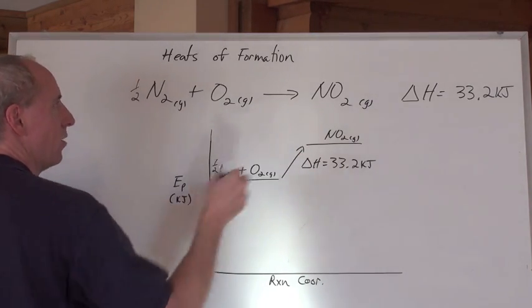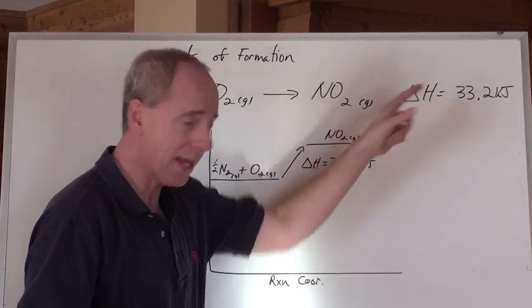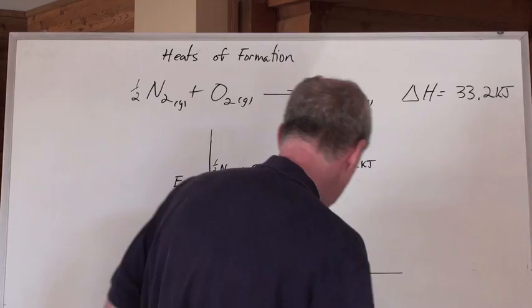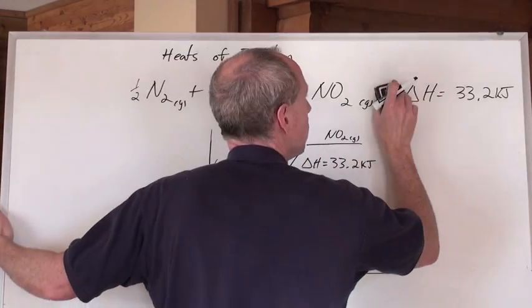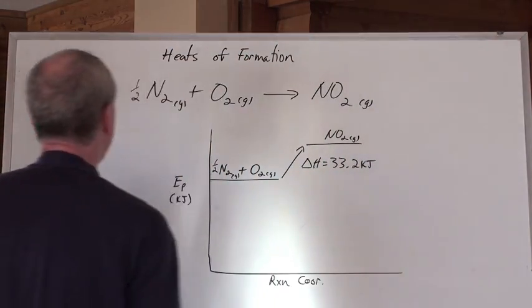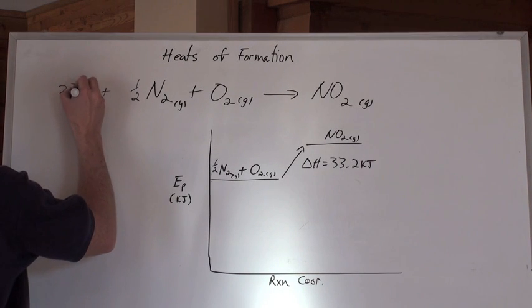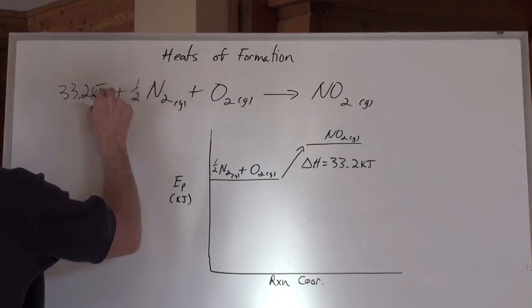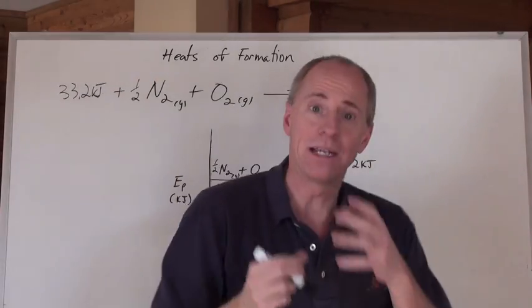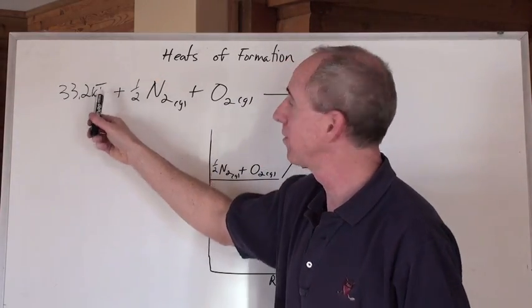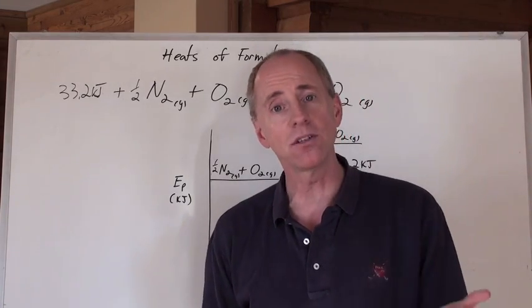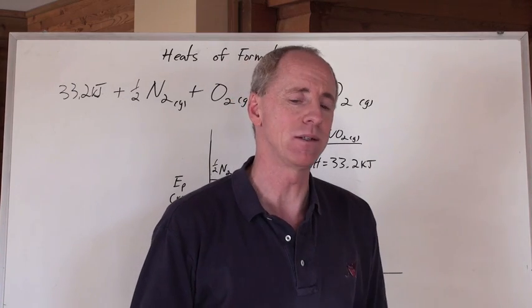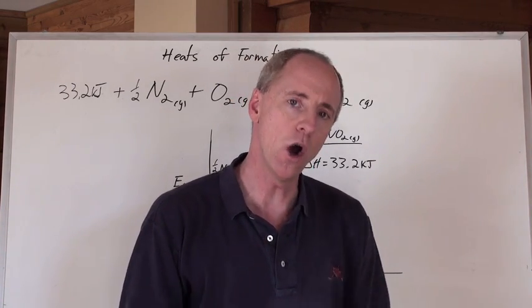Now, again, if somebody says, take that heat term and move it back into the equation, well, then it no longer is written as delta H notation, and that 33.2 kilojoules gets written over here as a reactant because the heat term belongs on that side when the reaction is endothermic. So, it's a positive delta H, you put it on the left. If it's a negative delta H, put that heat term on the right, but don't make it a negative when you put it back in the equation.